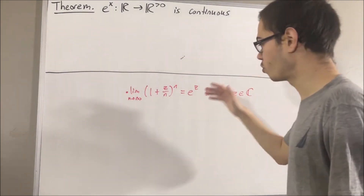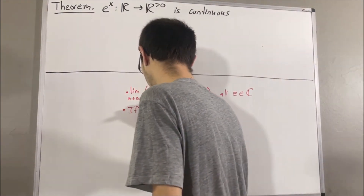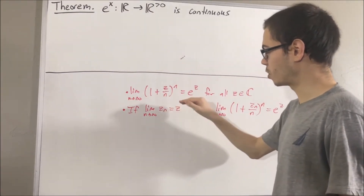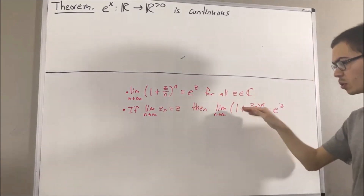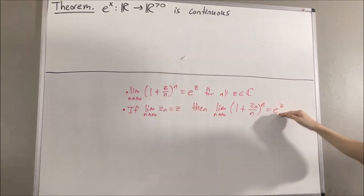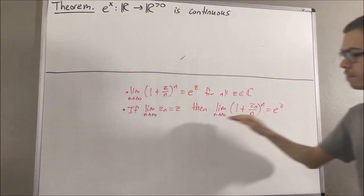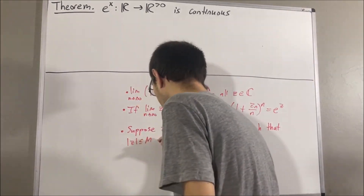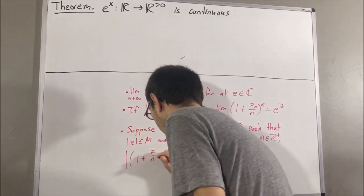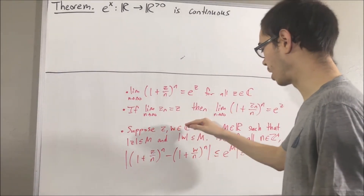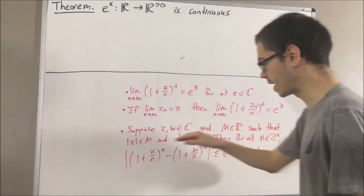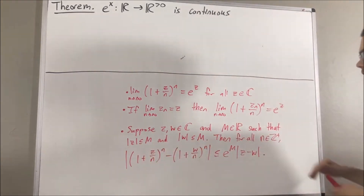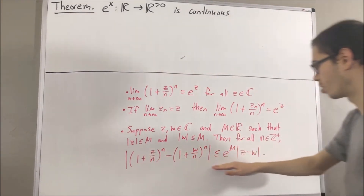A property that we proved about the complex exponential function is the following: if z_n is a sequence of complex numbers that converges to the complex number z, then the sequence (1 + z_n/n)^n converges to e^z. In the video where we proved this, we first proved the following preliminary result. Suppose z and w are complex numbers, and capital M is a real number such that the absolute value of z and the absolute value of w are both less than or equal to capital M. Then, for all positive integers n, this inequality is true.